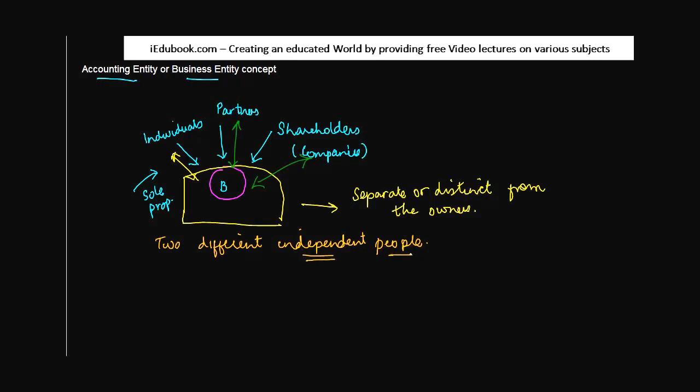The reason is that whenever you are doing accounting for a business, you can't mix the personal affairs of the stakeholders into the business. So for example, if the stakeholders or the owner puts in cash, this is normally passed in the books of accounts as if you are receiving cash.